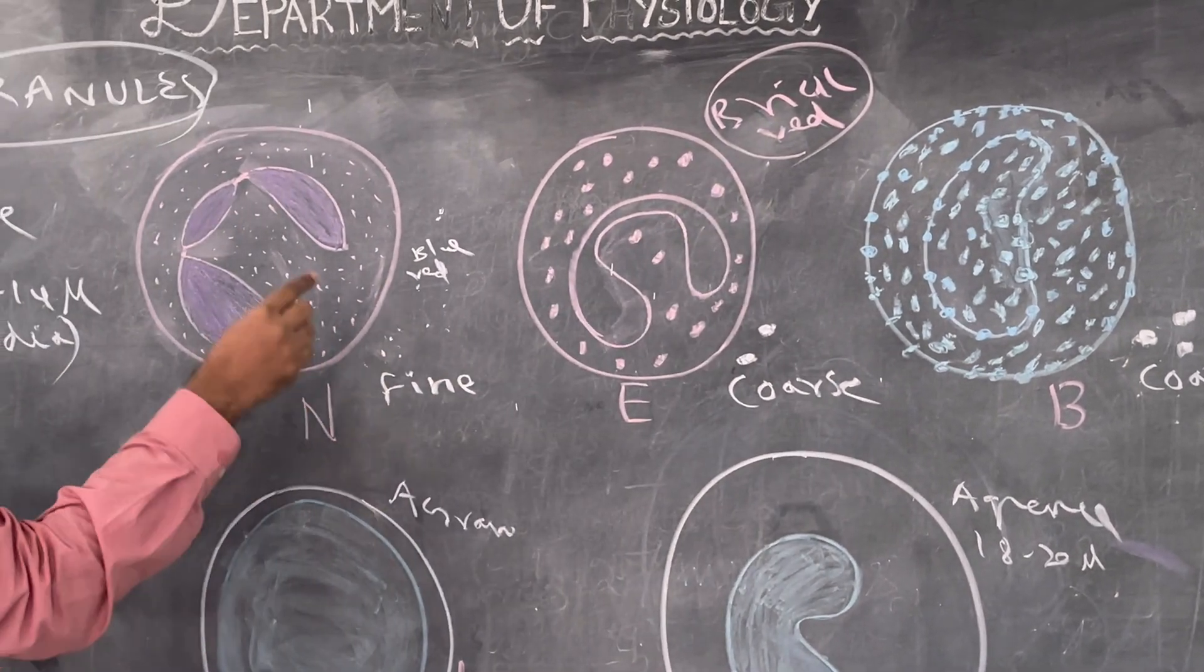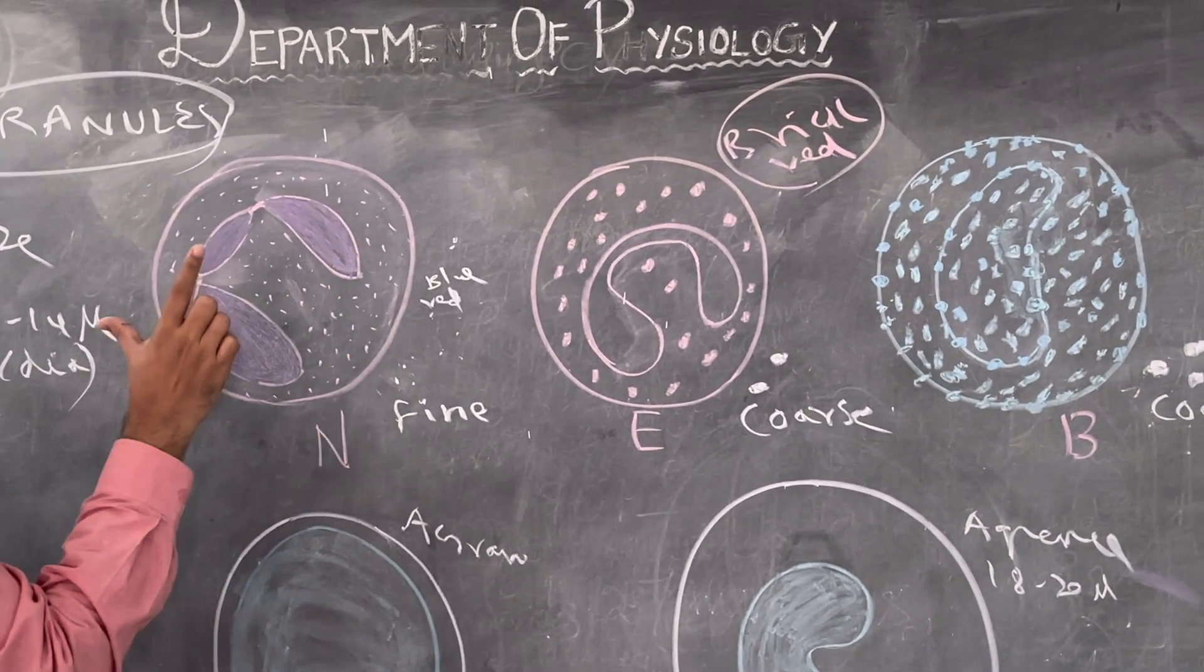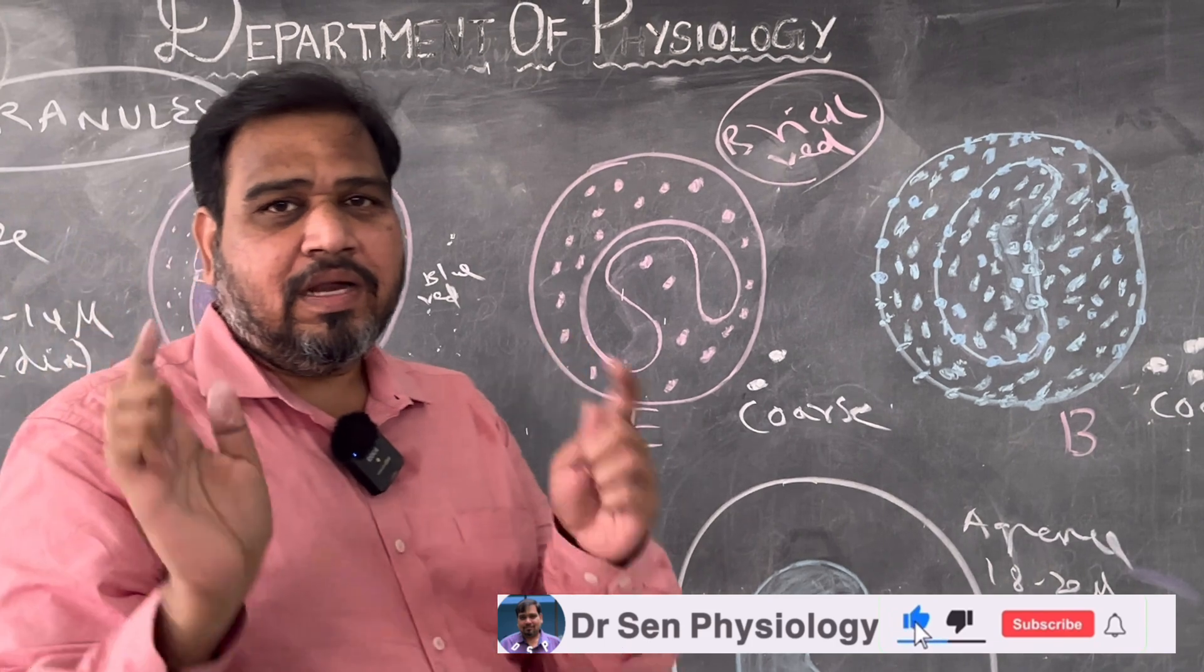Color here is red, whereas here it takes both blue color as well as red color, but very fine. So neutrophil, eosinophil granules I explained.